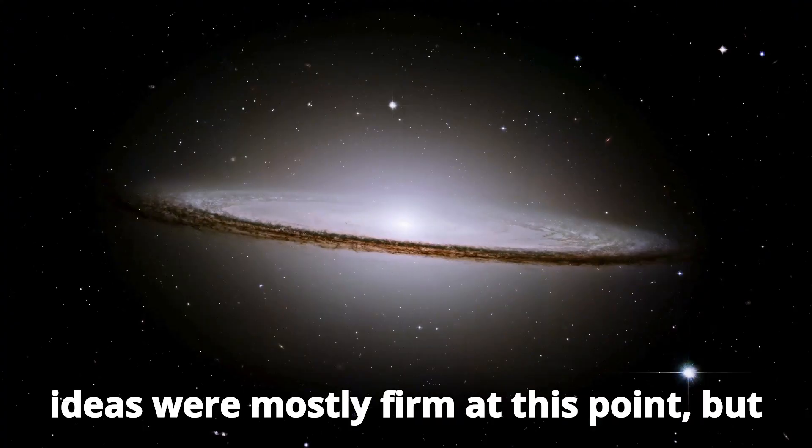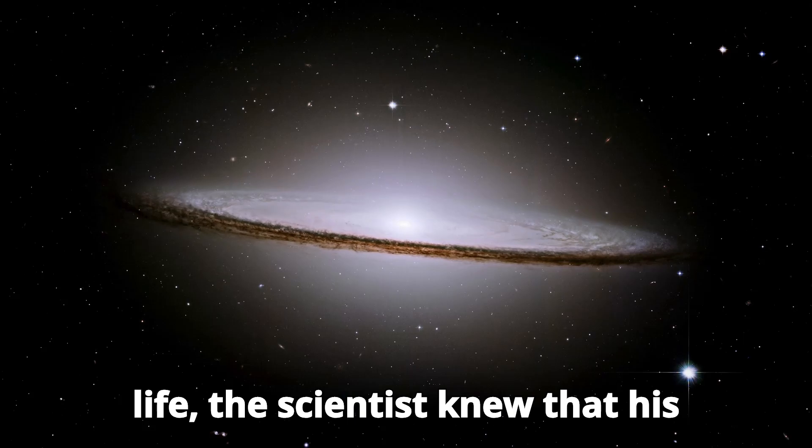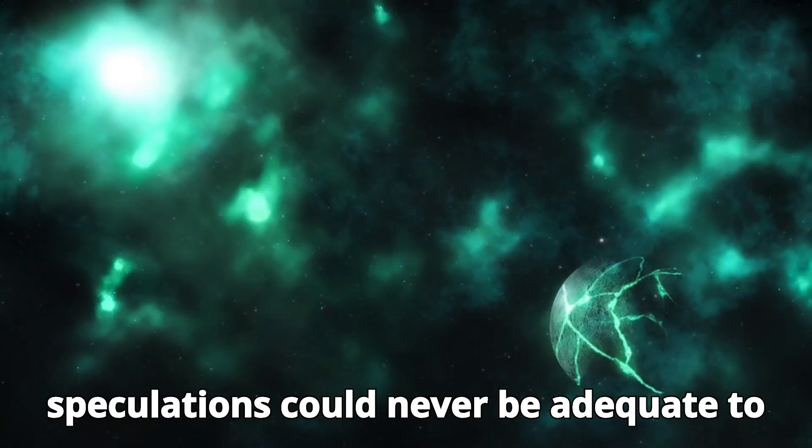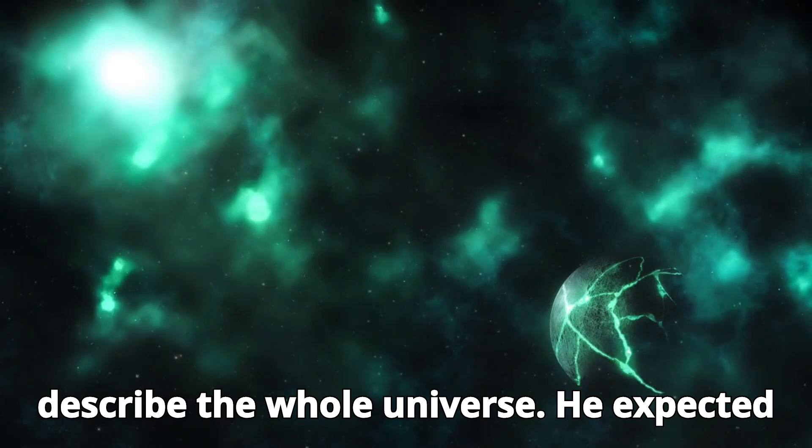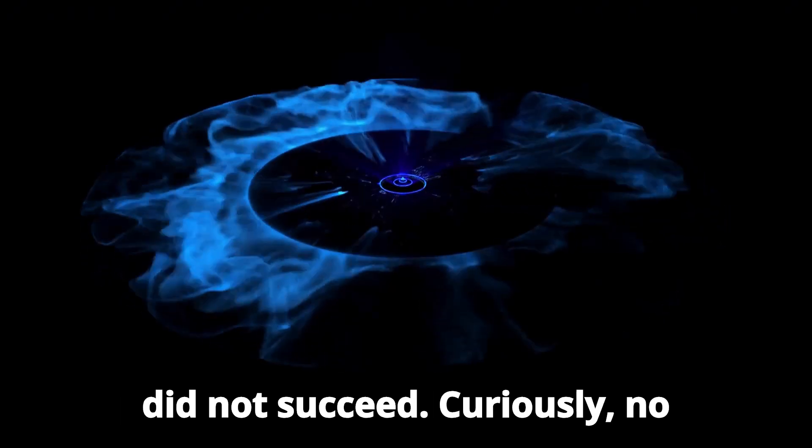Einstein's theories and ideas were mostly firm at this point, but he approached his limits. Throughout his life, the scientist knew that his speculations could never be adequate to describe the whole universe. He expected to find the universal equation, but he did not succeed.